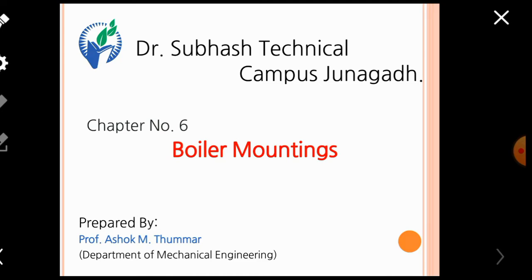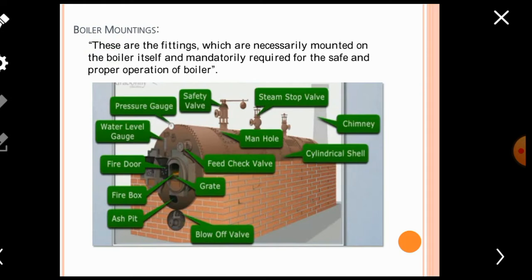These instruments and devices are specially mounted on the outer surface of a boiler. If someone wants to categorize all fittings, they fall into two categories: either such instruments may be known as boiler mountings, or as boiler accessories. The devices which are necessarily mounted on a boiler and are mandatory for the safe operation of the boiler are generally known as boiler mountings. These are compulsory for the safe operation of any boiler.